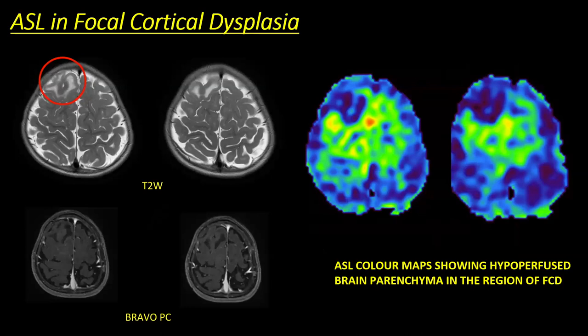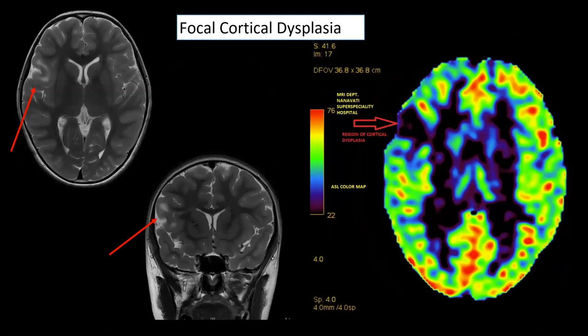Another example where the routine T2-weighted images show the actual cause of seizure in the form of focal cortical dysplasia, and the corresponding ASL color maps show hypoperfusion in this region. Another example with a small focal cortical dysplasia as the cause of seizures — though the spatial resolution of ASL is low compared to conventional MRI sequences, we can still see the small area as hypoperfused in the post-ictal phase, making our diagnosis more confident.